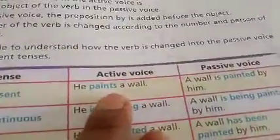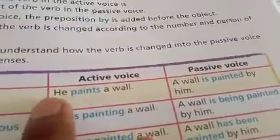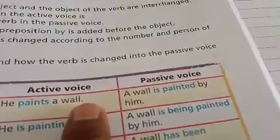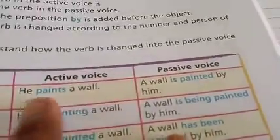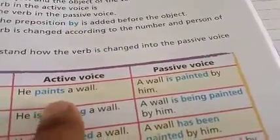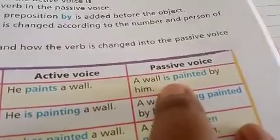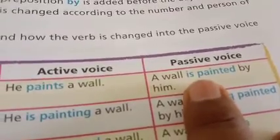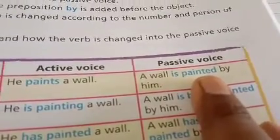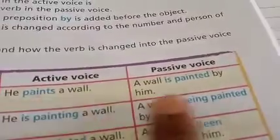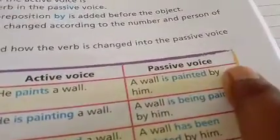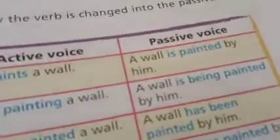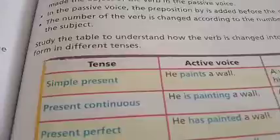For example: 'He paints a wall.' Here, 'he' is the subject, 'paints' is the verb, and 'a wall' is the object. In simple present tense, the object 'a wall' takes the place of the subject. You use the helping verb 'is/am/are' and the third form of the verb — 'paints' becomes 'painted.' Before the original subject you add 'by.' So the passive form is: 'A wall is painted by him.'